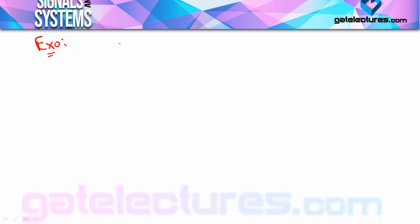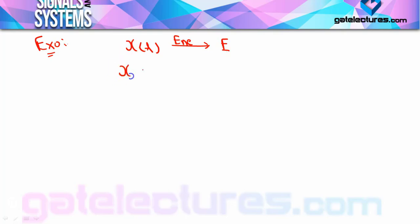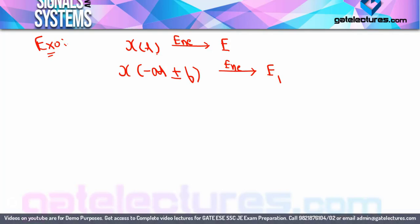The first concept: a signal x(t) is given whose energy is E. You have to find the energy of x(−at + b). The concept here is: when you perform scaling or shifting operation on t in any signal x(t), what change comes in the energy? How will the energy change when we perform shifting and scaling operations on time?